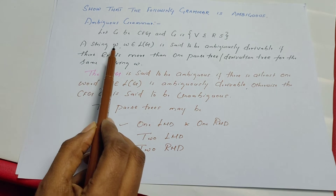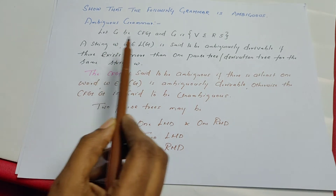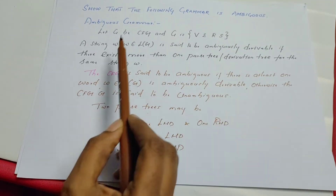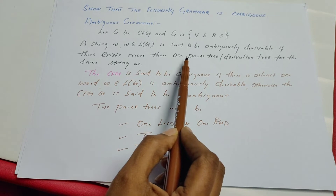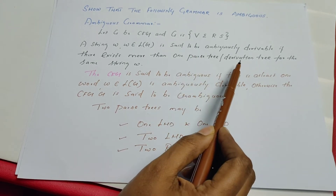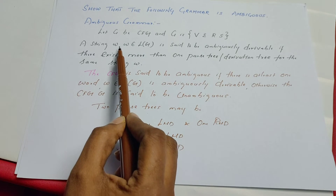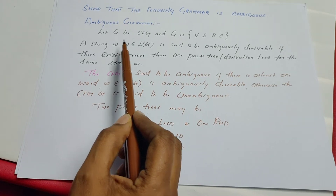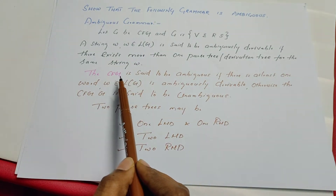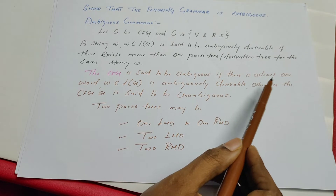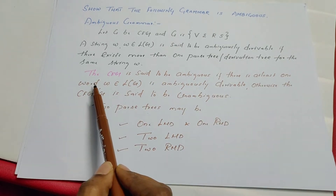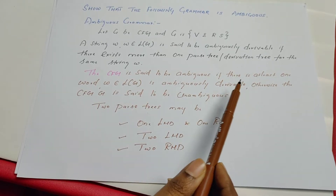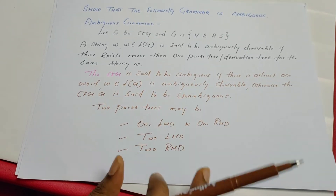If there is a string W and if the string is generated by this grammar G, it can be ambiguously derivable when there exists more than one parse tree. The other name for parse tree is derivation tree. In that case, we can call the string as ambiguously derivable. When can we say the grammar itself is ambiguous? The context-free grammar is said to be ambiguous if there is at least one string or one word which belongs to the particular language that is ambiguously derivable. Otherwise, the context-free grammar is said to be unambiguous.